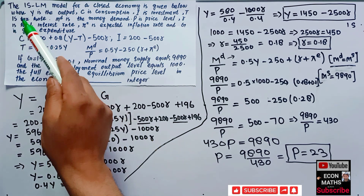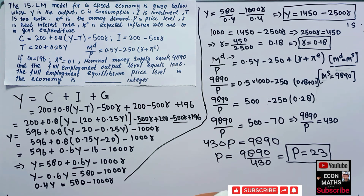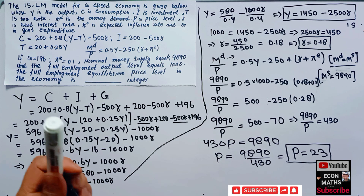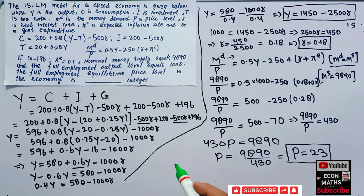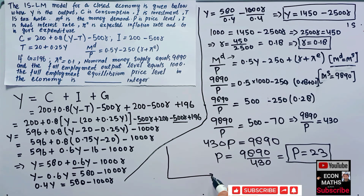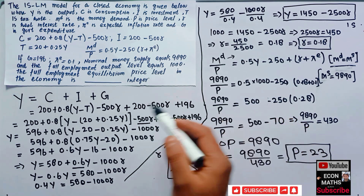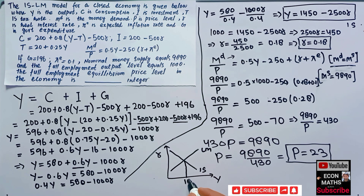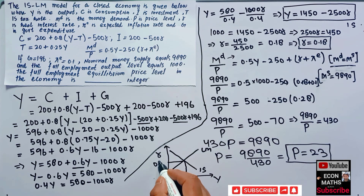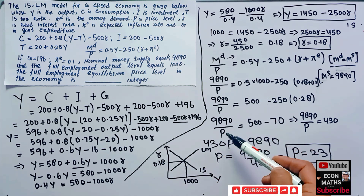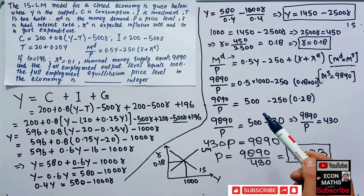We can also graph this: plotting real interest rate against output level, equilibrium occurs where the IS curve intersects the LM curve. Our full employment output level was 1000 and the real interest rate was 0.18, which is the equilibrium point on the IS-LM diagram.